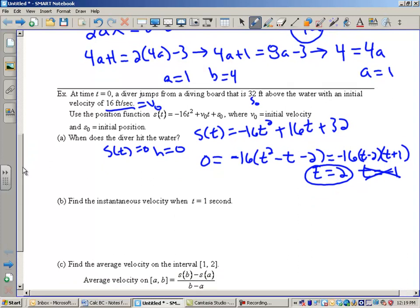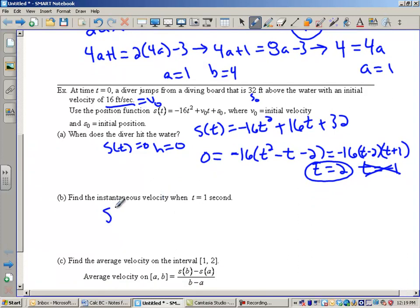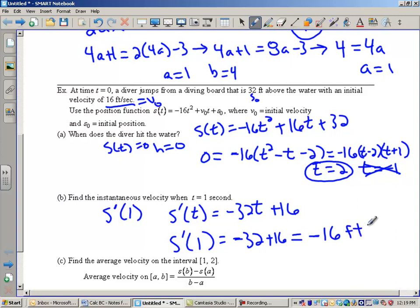Part B says find the instantaneous velocity. This means s prime at 1. Find the derivative and plug in 1. So we have an equation for s of t, so let's find s prime of t. s prime of t would be negative 32t, I'm using this equation right here with our differentiation rules, plus 16. And of course, the derivative of 32 is 0. So now I'm going to plug in 1 for t, and I get negative 32 plus 16, which is negative 16 feet per second.